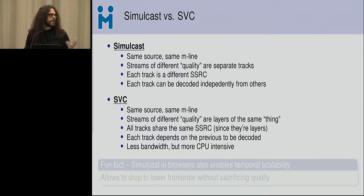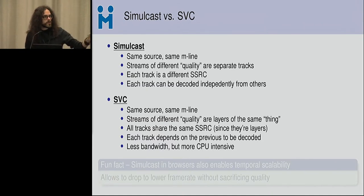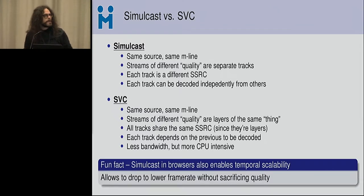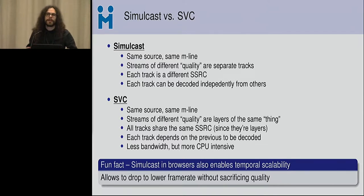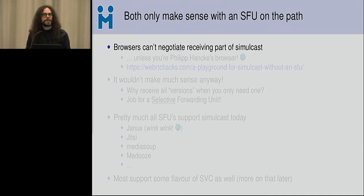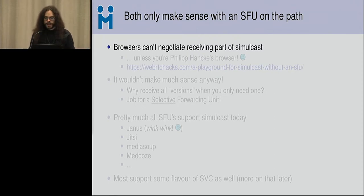Compared to simulcast, SVC is a bit more bandwidth-efficient because you encode different layers rather than completely independent tracks. But it's more CPU-intensive for the encoder. An interesting note: when you enable simulcasting in browsers like Chrome or Firefox, you get temporal scalability out of the box — which is actually a feature of SVC, not simulcast itself. Temporal scalability drops some packets from an existing stream to still give you something decodable at a lower bitrate and frame rate. Both simulcast and SVC only make sense with an SFU.